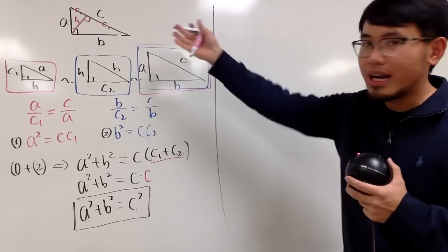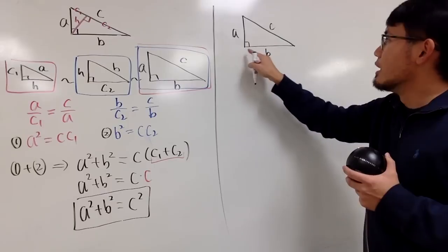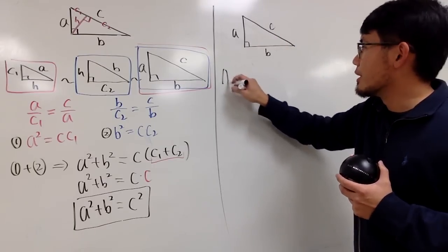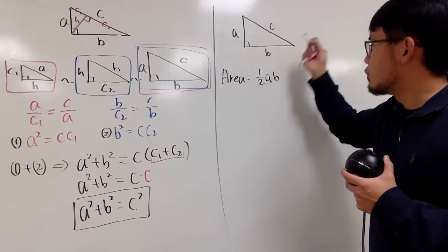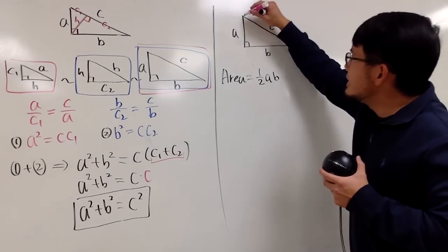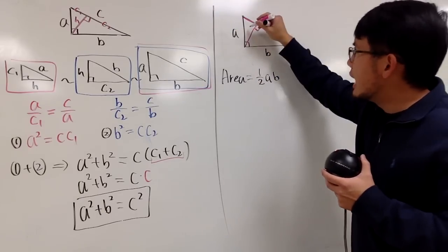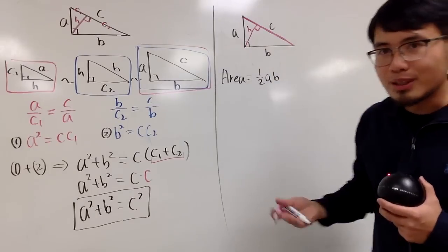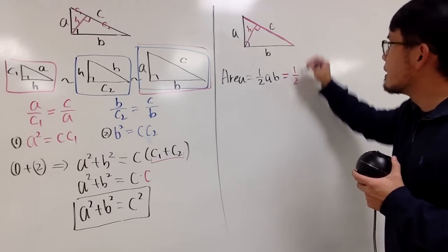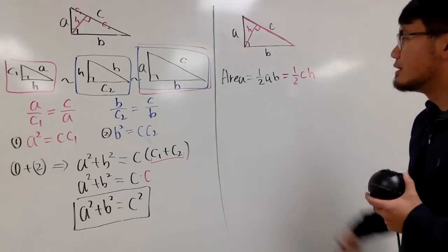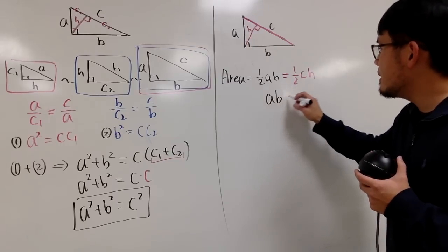Let me draw that again right here for you guys. This time, we are going to talk about area. When we have this right triangle, if you take b as your base, then a will be your height. So we can talk about the area of this triangle, which is just 1 half base times height — 1 half times a times b. But if you look at c as your base, the height will go from here to here, and I'll call this to be h. We are talking about the same right triangle, so the areas have to be the same — 1 half times c times h.